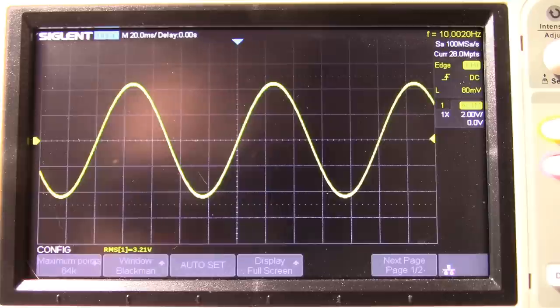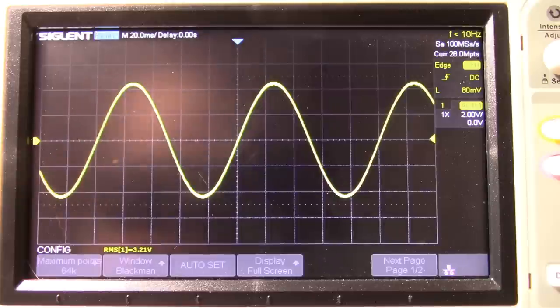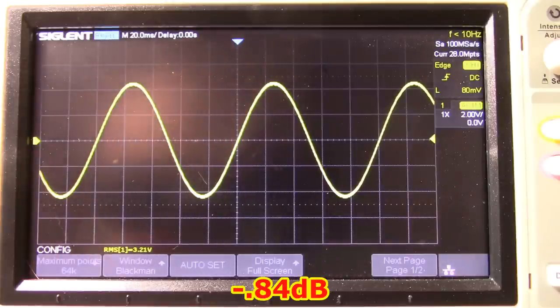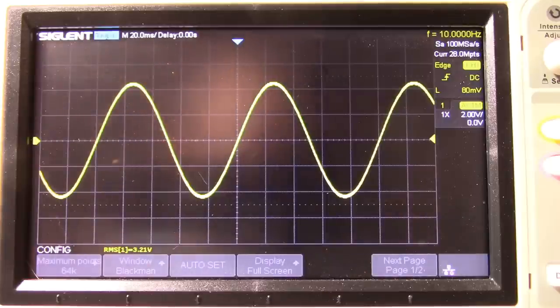For people who want to see that in decibels, we'll hit the log button times 20. And it's at negative 0.84 dB. It's less than 1 dB down. So, you know, that's, I would say, is a very good substitute.